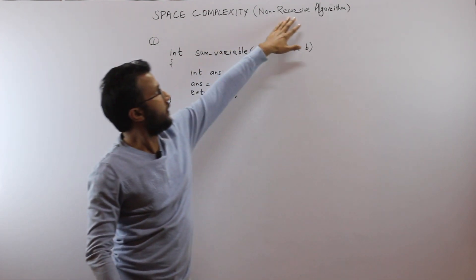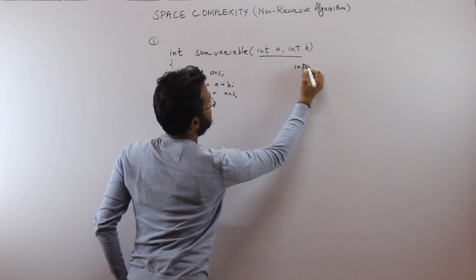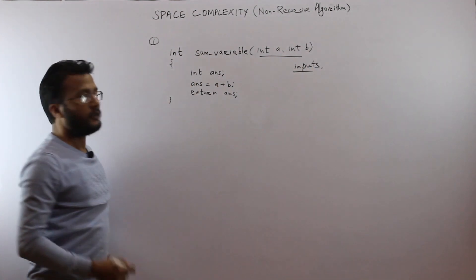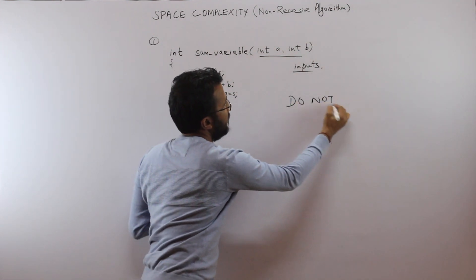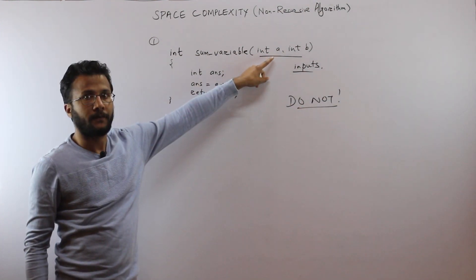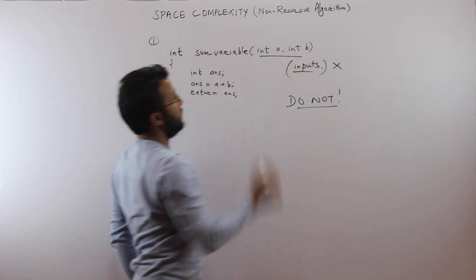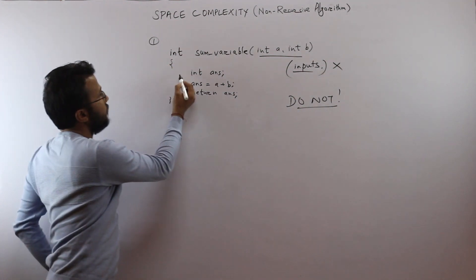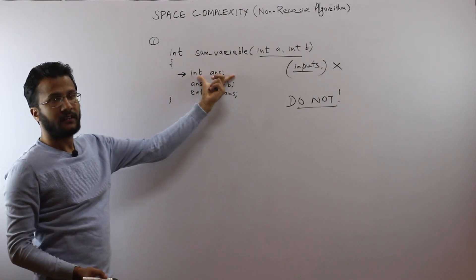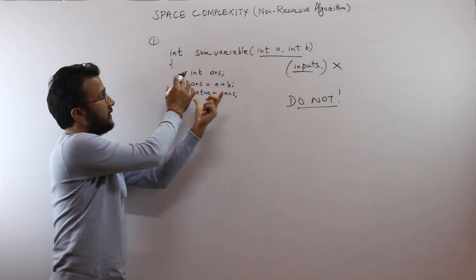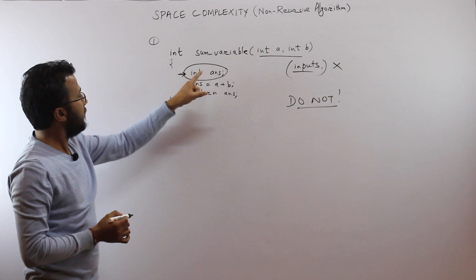This algorithm is a non-recursive algorithm. In this particular function there are two inputs: a and b. When we are calculating the space complexity, we do not consider the space required for the inputs. There are two inputs here, a and b, and the space required for these inputs is not considered. If you look at this function, there is one variable declared here — that variable is 'ans'.